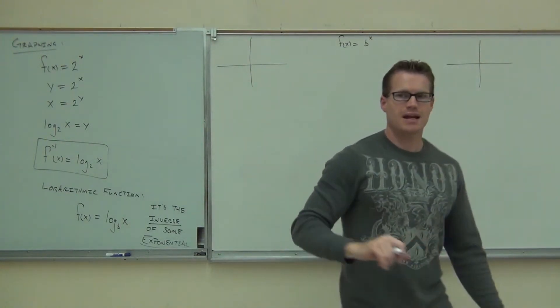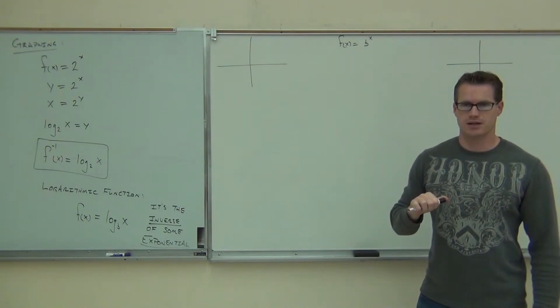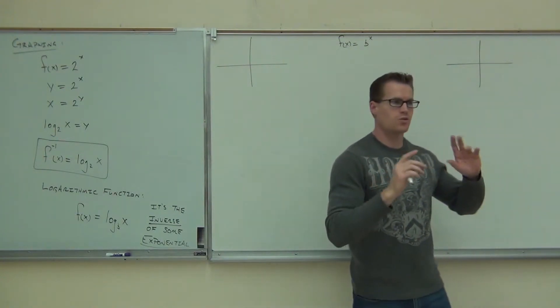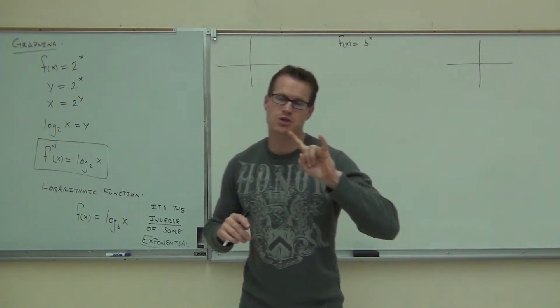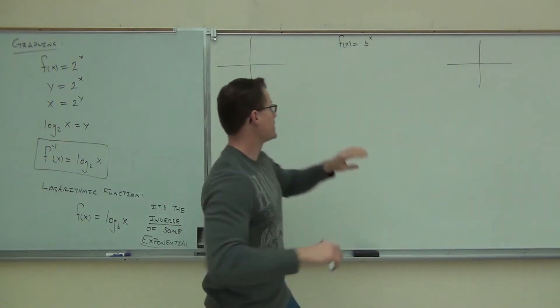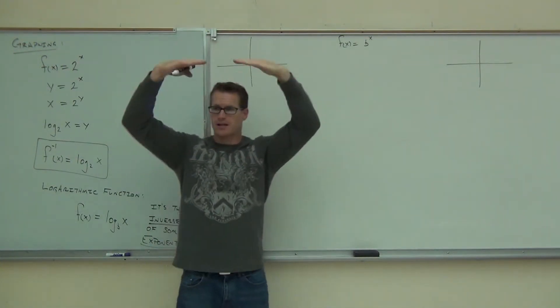F of x equals b to the x. Is that a logarithmic or an exponential? That's definitely exponential. It has no logarithm anywhere in there, right? Now, these graphs had two shapes. Do you remember the different shapes you could have for your exponentials? I sure hope you do. Were they down here? No. They were definitely above our x-axis, right?